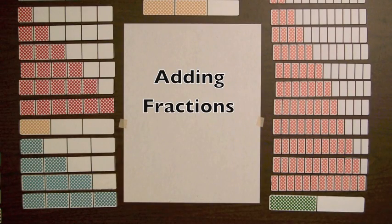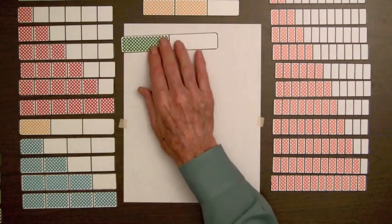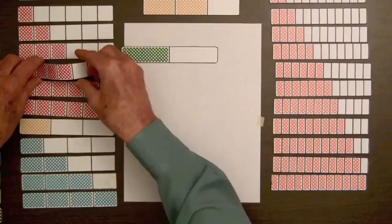Let's find the sum of the fractions one-half and four-sixths. Here's the bar for one-half, and here's the bar for four-sixths.